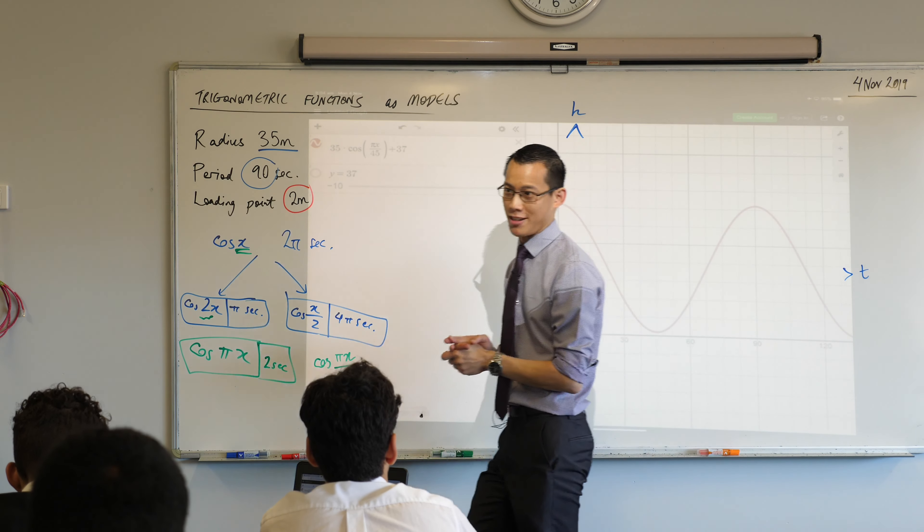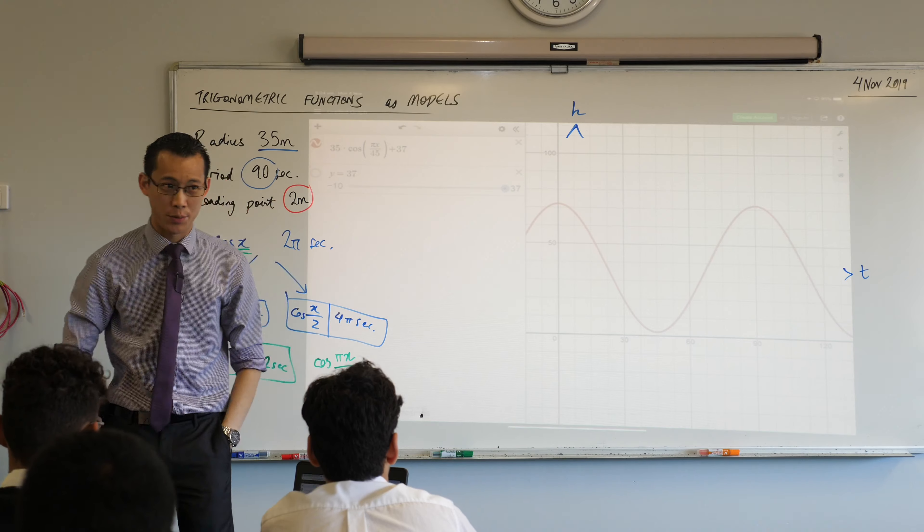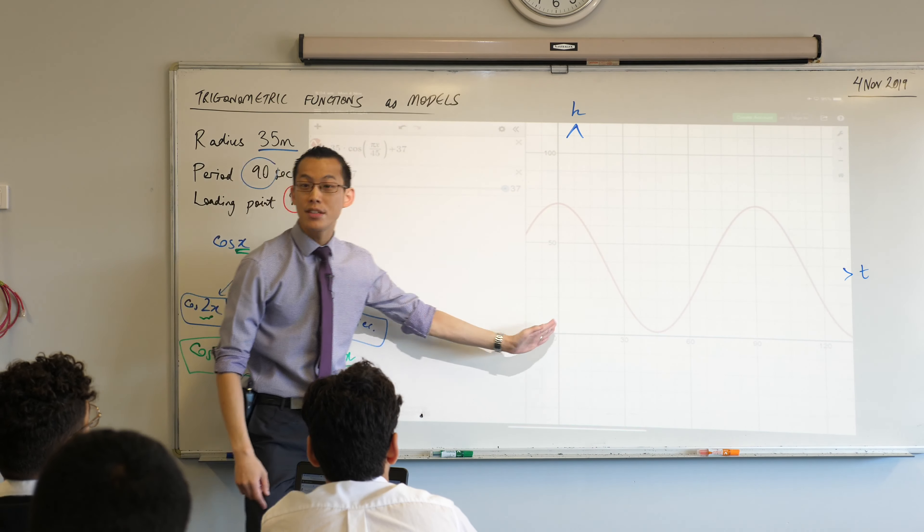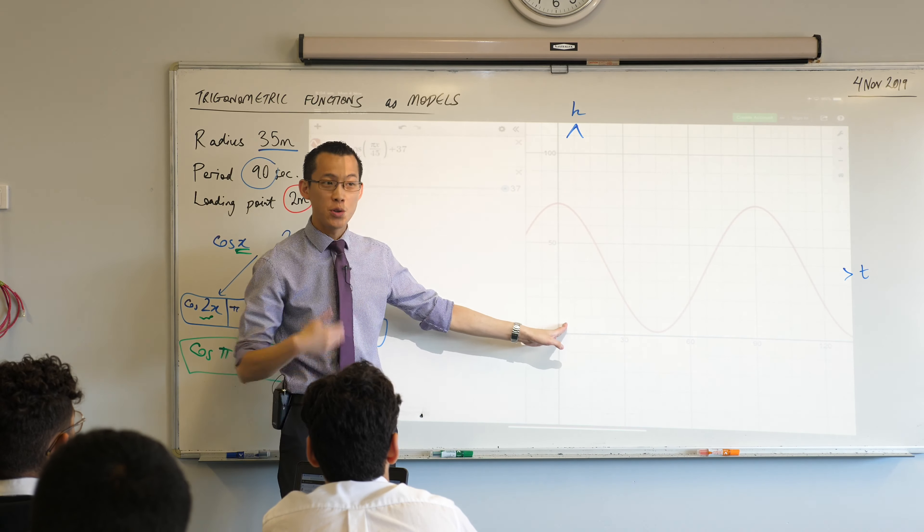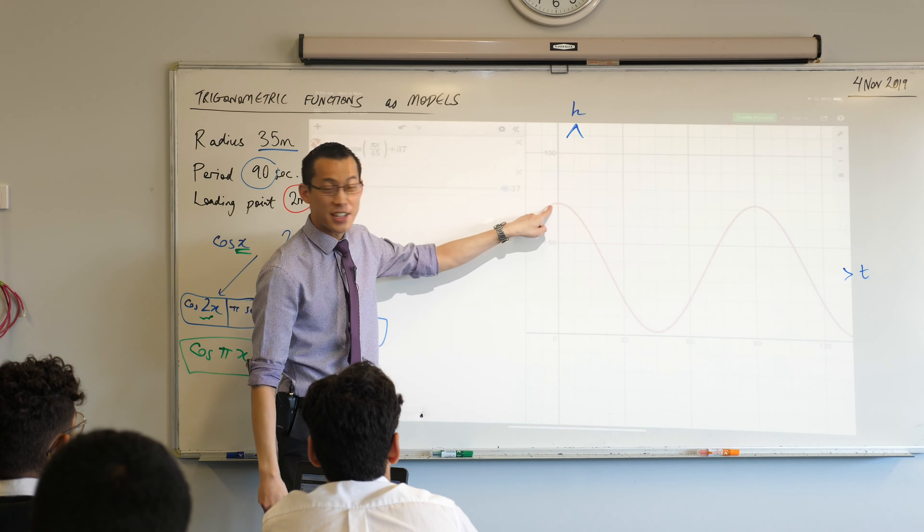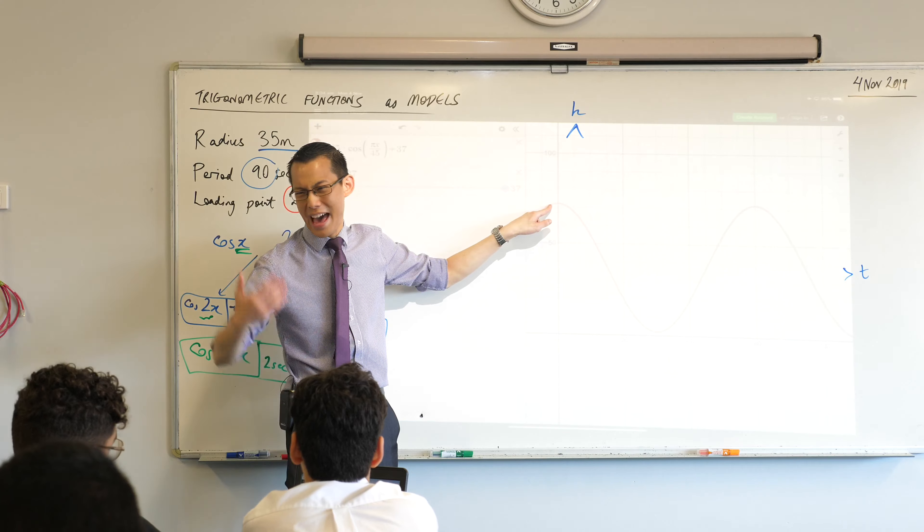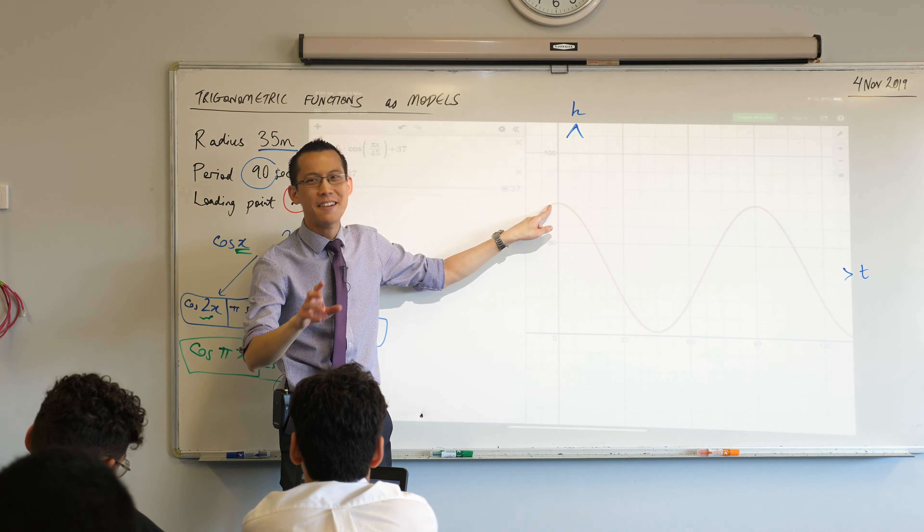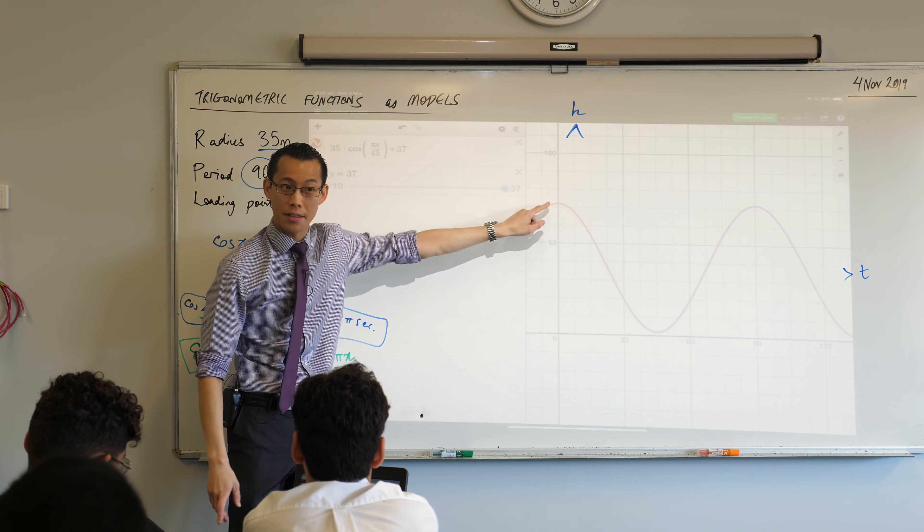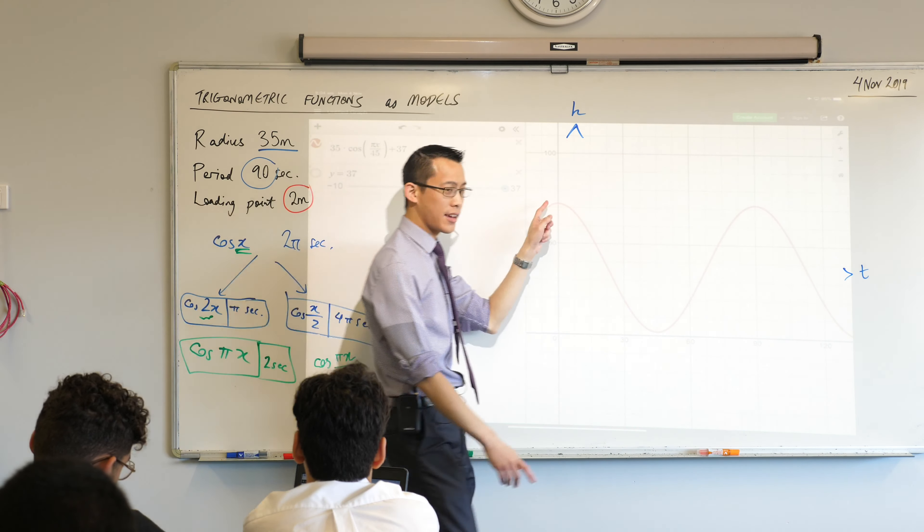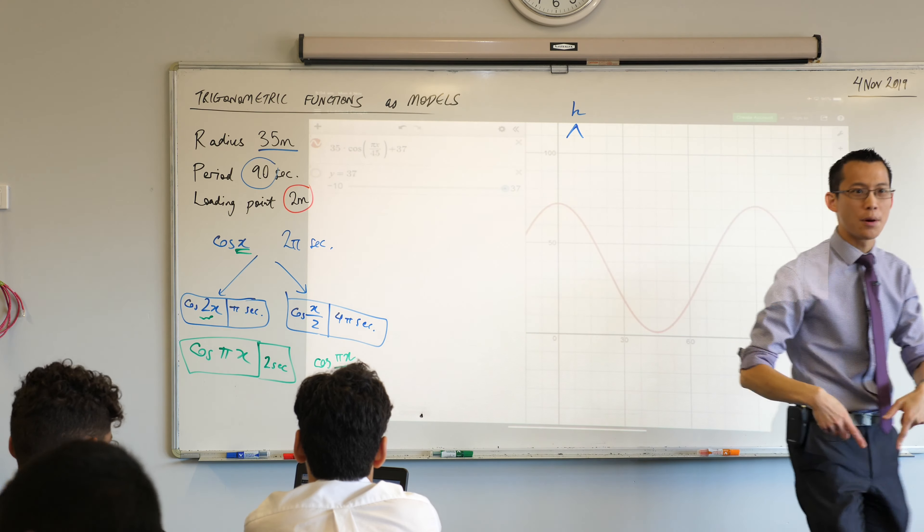Okay. Now we just have one last thing. One last thing. When you get onto a ferris wheel, right? At time zero, when you board, do you board the ferris wheel at the top of the ferris wheel? No. No. If you're like man and parachuting down, possibly, but usually not, right? So I actually want this to start down the bottom.